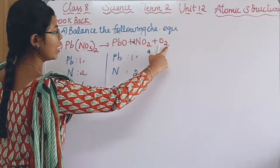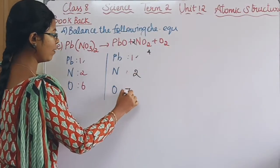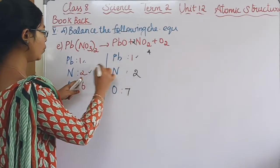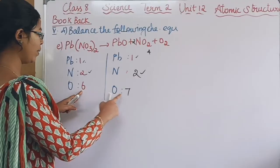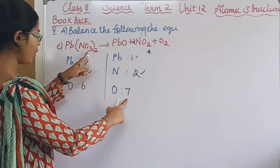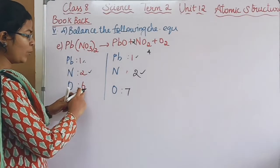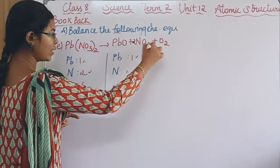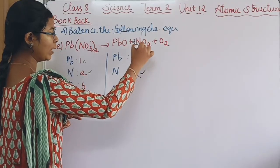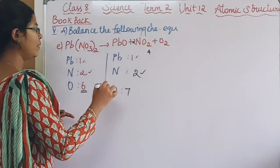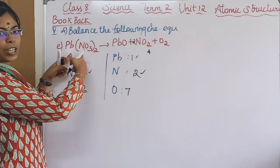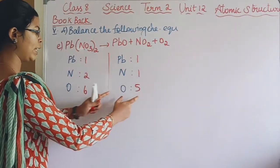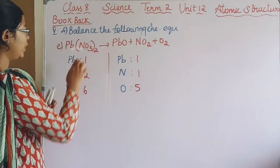Now we have 6 plus 1 equals 7. Since you have 7 on one side and 6 on the other, it will not be balanced by simple multiplication, so we need to go to the product side and adjust the coefficient. We will change the reactant so that the atoms present in the product and reactant match.